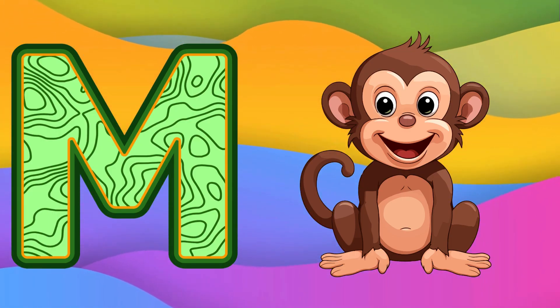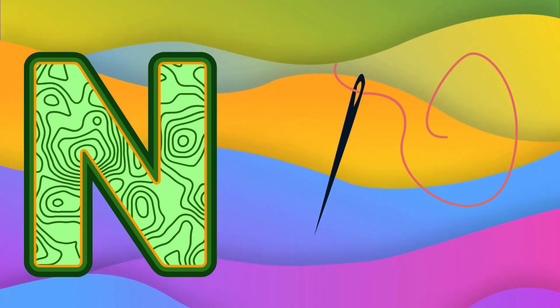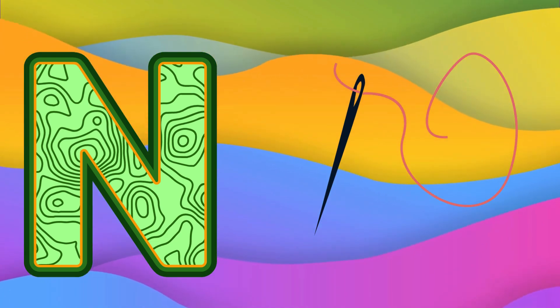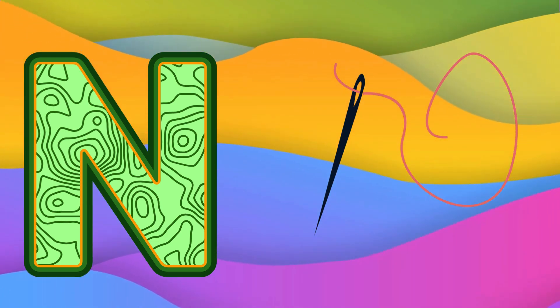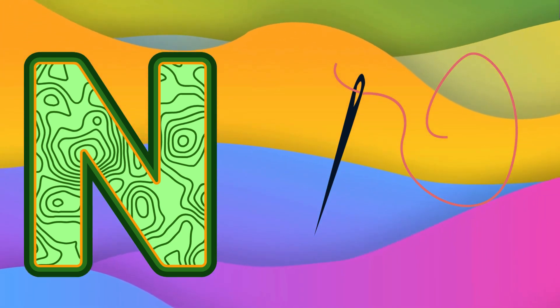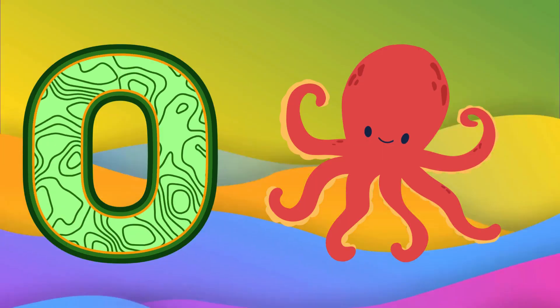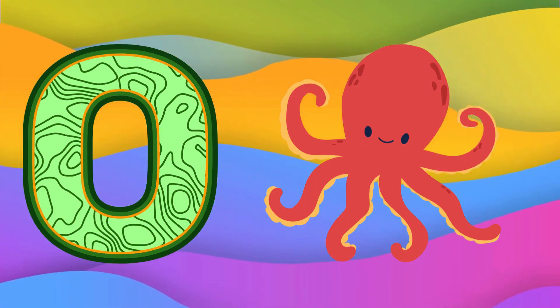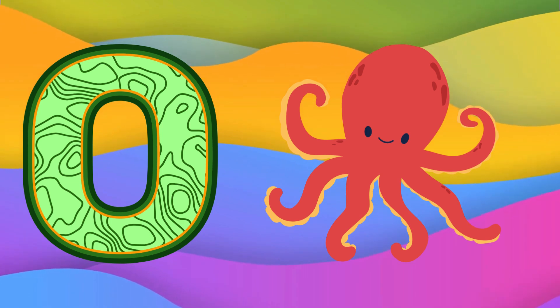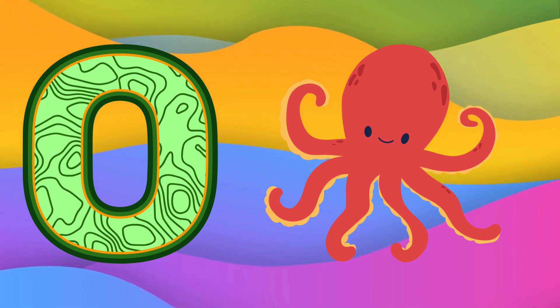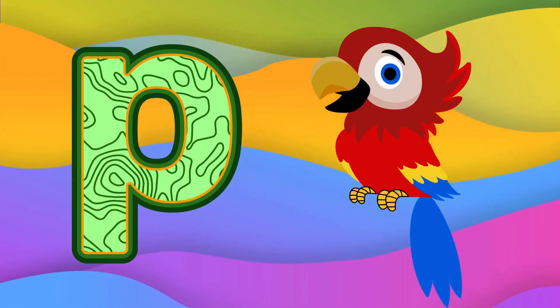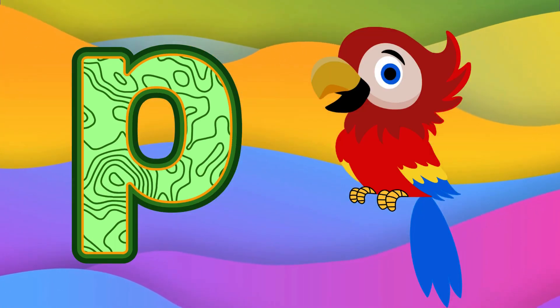M is for Monkey. Ma, Ma. Monkey. N is for Needle. Na, Na. Needle. O is for Octopus. A, A. Octopus.